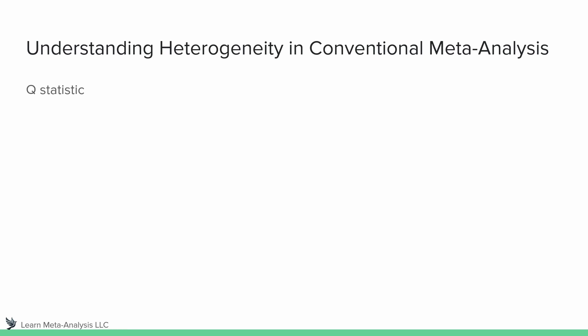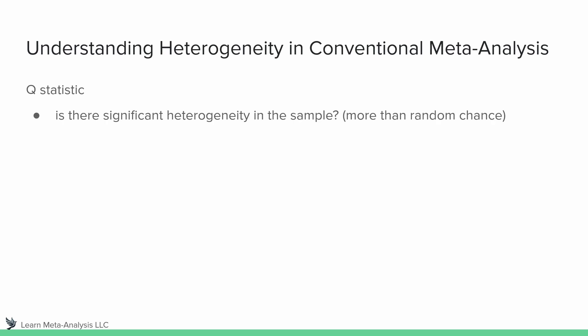We've got three statistics that we want to really pay attention to. First, our Q statistic. This is essentially asking: is there significant heterogeneity in the sample more than random chance would predict? Here we're looking for a p-value. If p is less than 0.05, that means there is significant heterogeneity.